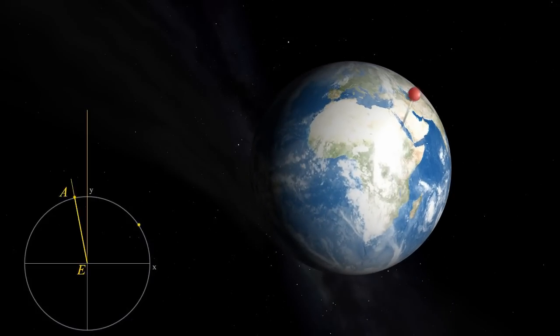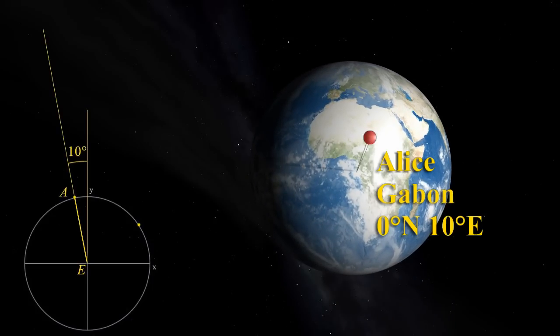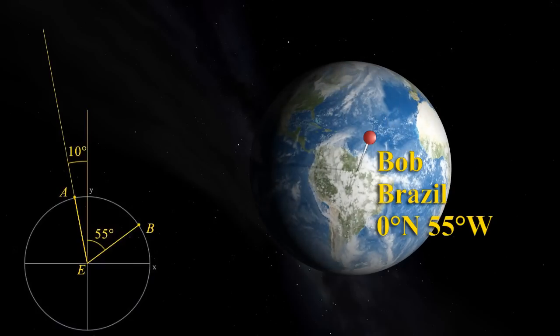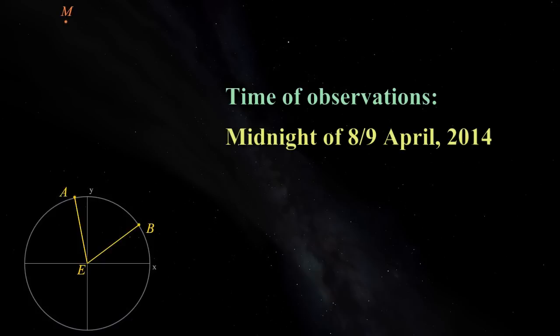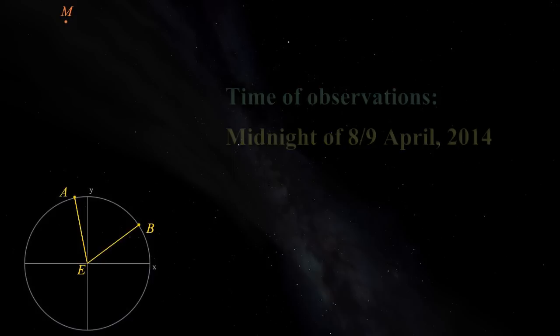We'll have Alice in Gabon, Africa, at 0 degrees north, 10 degrees east. Our second observer will be Bob in Brazil, at 55 degrees west. Measurements will be made at midnight UTC on the night of 8th April 2014. This is a few hours after opposition, but it's more than good enough for our purposes.